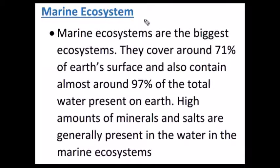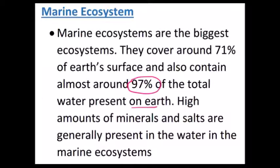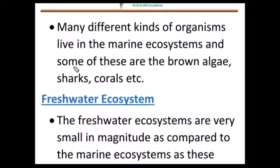We classified aquatic ecosystems into freshwater and marine ecosystems. Let's discuss about marine ecosystem first. Marine ecosystem is the biggest ecosystem on the earth — it covers 71% of the earth's surface. Out of total water available on the earth, 97% of water is present in the oceans. Apart from these, oceans have a high level of minerals and salts. In oceans, there are plenty of organisms belonging to different categories, like corals, sharks, brown algae, and so on.